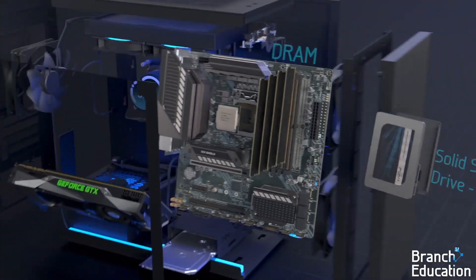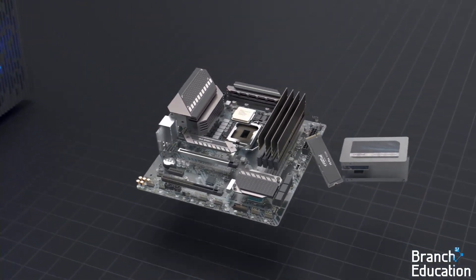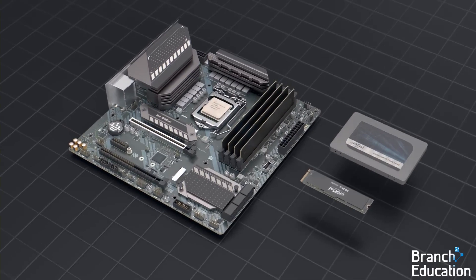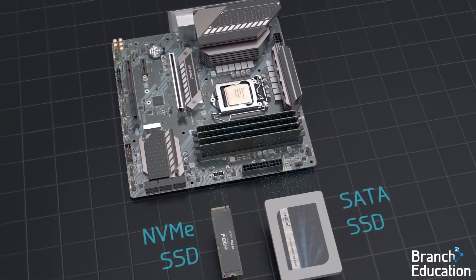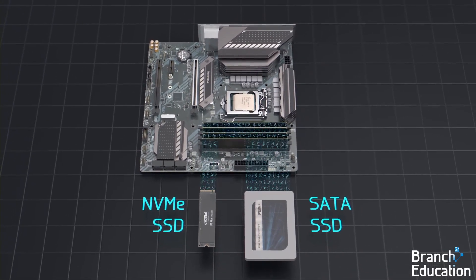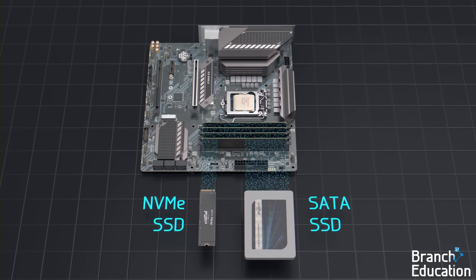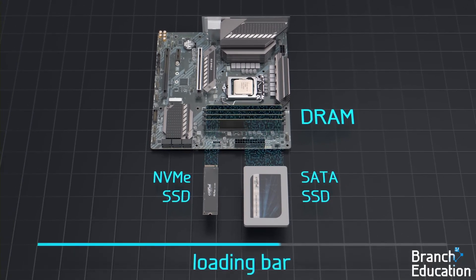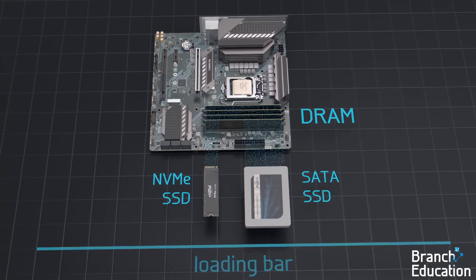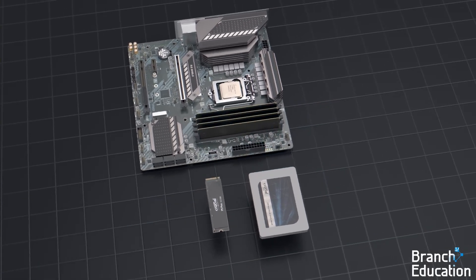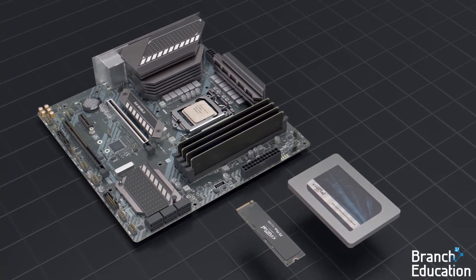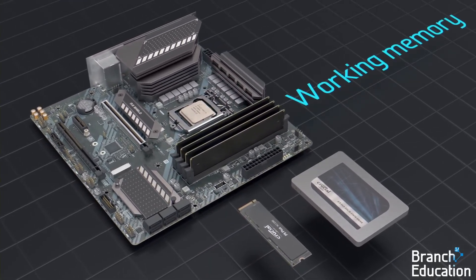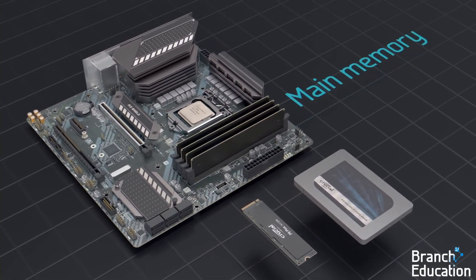An SSD stores all the programs and data for long-term storage, but when your computer wants to use that data, it has to first move the appropriate files into DRAM, which takes time — hence the loading bar. Because your CPU works only with data after it's been moved to DRAM, it's also called working memory or main memory.